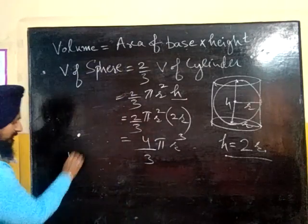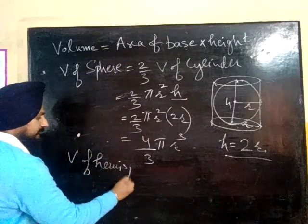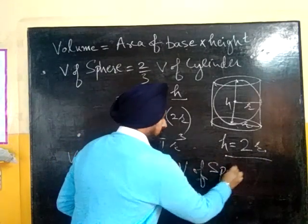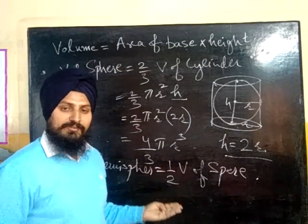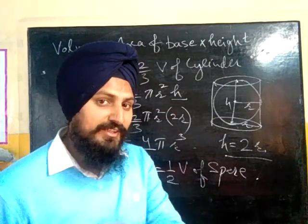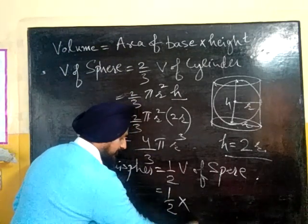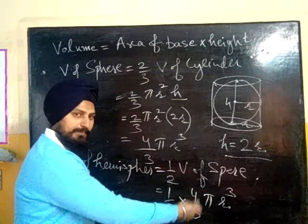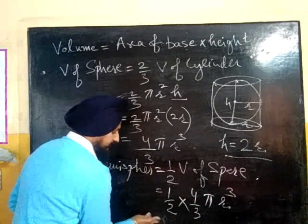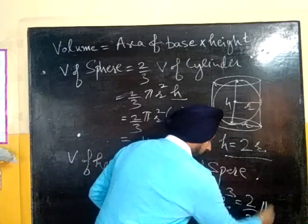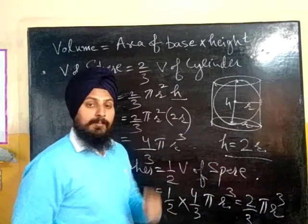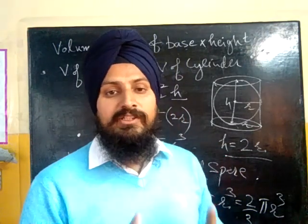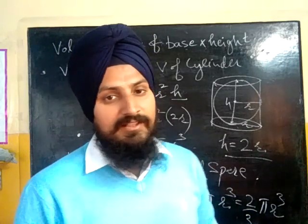And the last one is the hemisphere. The volume of hemisphere is half the volume of sphere. So it is one half times four thirds pi r cubed, which simplifies to two thirds pi r cubed. By one basic formula — volume equals area of base multiplied by height — we can learn and interrelate all these formulas.